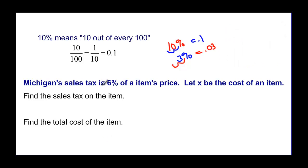So it asks us for Michigan's sales tax of 6% of an item's price. Let x be the cost of an item. First it wants us to find the sales tax. So we take 6% or 0.06 times the price. So we're going to have 0.06x. That would be our tax.